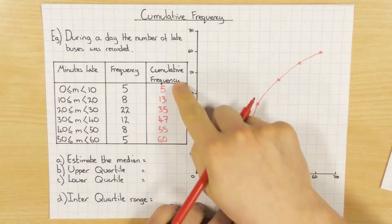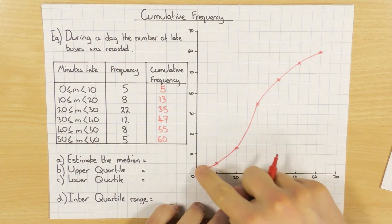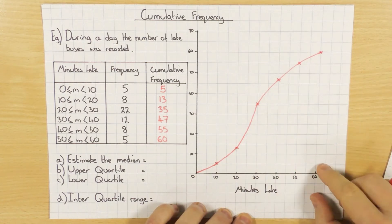It should always be increasing, because as I said, it's a running total. So if you suddenly come back down, you know you've made a mistake.